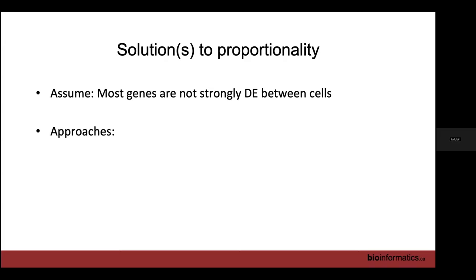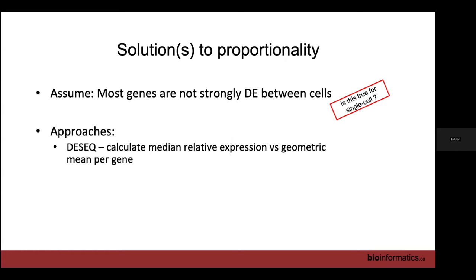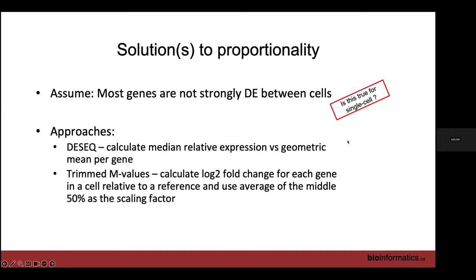As you may have learned in the bulk RNA-seq course, this is also a problem there, and solutions exist. They assume most genes are not strongly differentially expressed between cells — though that assumption may not hold for single cell, e.g., comparing a T-cell and an epithelial cell. You could use DESeq2, which calculates mean relative expression versus geometric mean per gene, or Trimmed Mean of M-values (TMM). However, both were designed for bulk RNA-seq where there are no zeros. When applied to data with lots of zeros, they completely fail — so they don't work for single cell.